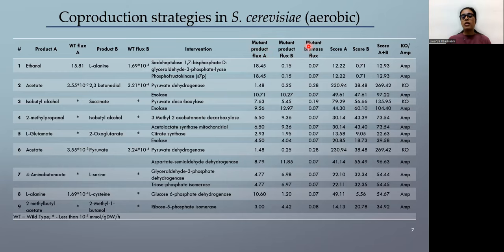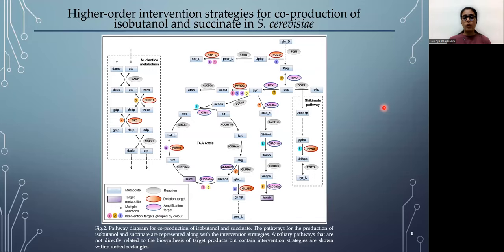So the scores are given by the ratio of percentage of increase in product flux to the percentage of decrease in biomass flux. We have score A and B for the individual products and also an average score A plus B for both the products together. So we can identify the intervention strategy based on whichever product we would like to focus on more or based on the whole process as a whole.